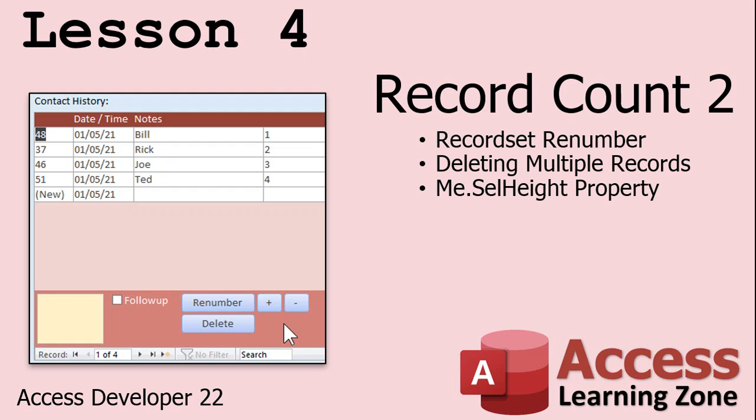And in lesson four, we're going to take the same form used in lesson three for automatic numbering and replace the programming underneath it to use record sets instead of using the go-to-record command. We'll also see an issue that comes up when deleting multiple records and how to deal with it with the cell height property.